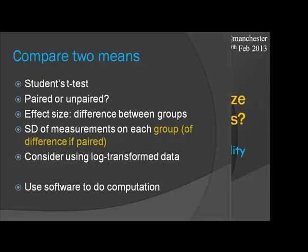For two means — a Student's t-test — there are questions about whether it's paired or unpaired. You need an effect size, which is the difference between the two groups that you want to detect — how small a difference you want your study to be able to find. And you need the standard deviation of the measures in the two groups, which you hope to find in the literature. If you've got before-and-after data, then you need the standard deviation of the difference, because that's really what drives it. You use your favourite software to calculate it.